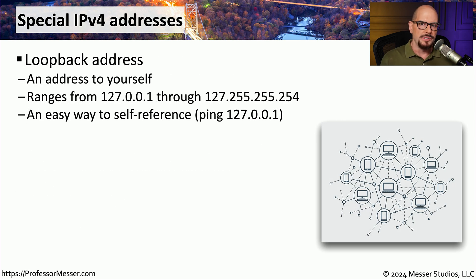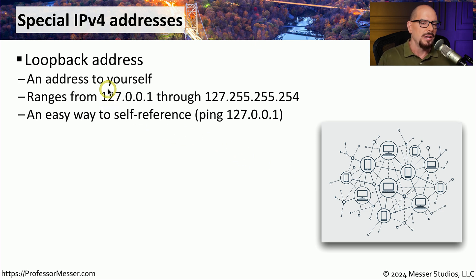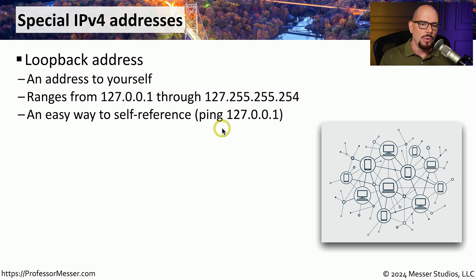There are also other IP addresses you should be familiar with. One of these is a loopback address — a way to define your local device without having to know a specific IP address. Every device on the network has a loopback address, which is a number between 127.0.0.1 through 127.255.255.254. If you wanted to ping your local device, you could ping 127.0.0.1 and your local device should respond.